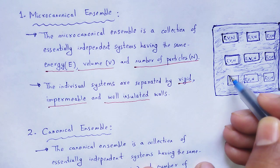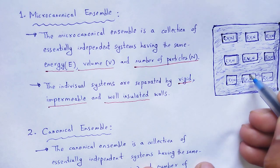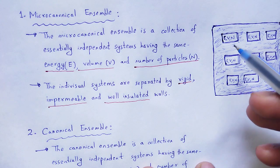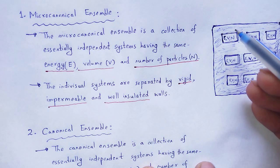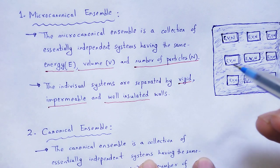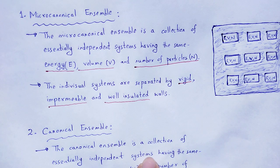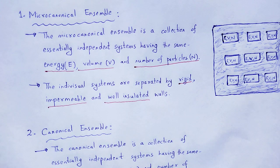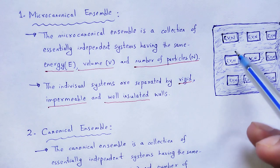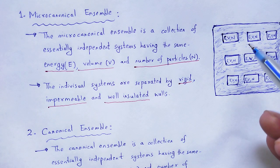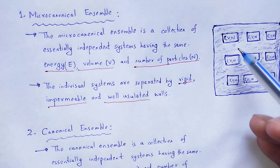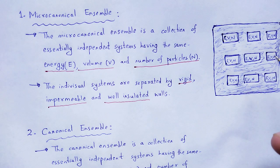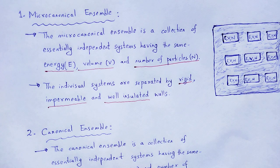Each system has the identical macroscopic properties: same energy, volume and number of particles. And these systems are independent with each other, as the nature of the walls are rigid, impermeable, and well insulated. Due to this nature of that wall, hence the value of energy, volume, and number of particles are not affected by the presence of other systems.